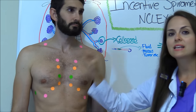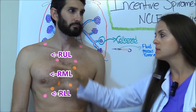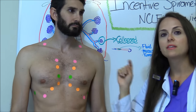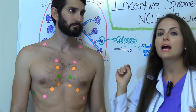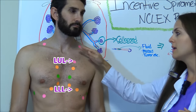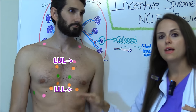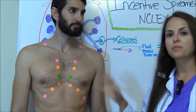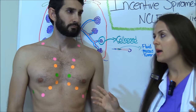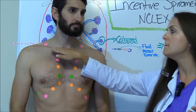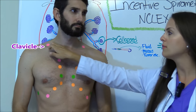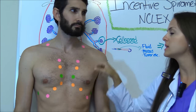The right lung has three lobes: the right upper, the right middle, and the right lower. The left lung only has two lobes: the left upper and the left lower. So whenever you're listening, you want to start out at your apex up at the top of the lungs, right above the clavicle, just slightly above it right here where you see these pink stickers.